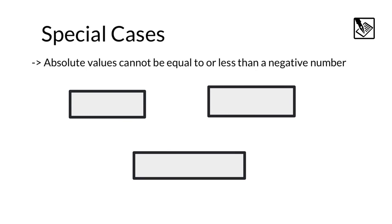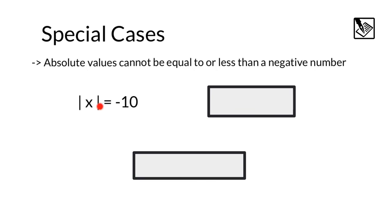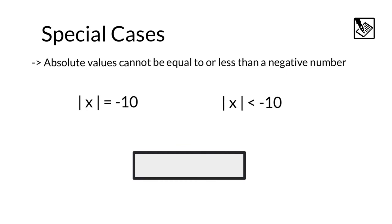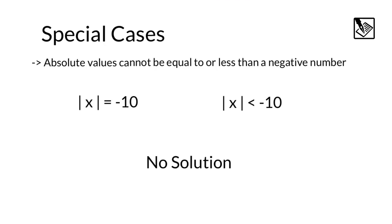To wrap this video up, I have a very special treat: some special cases. Absolute values cannot be equal to or less than a negative number, since absolute values are always positive. For example, absolute value of x could never equal negative 10, because no matter what value x is, it's always going to end up being positive. Likewise, absolute value of x certainly couldn't be less than negative 10 either. So be on the lookout for these special cases — when it's equal to or less than a negative, these equations or inequalities have no solution. Alright everyone, I hope this video was helpful. Be careful. Be successful.